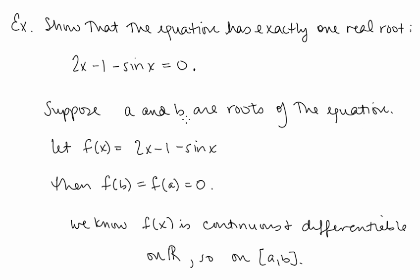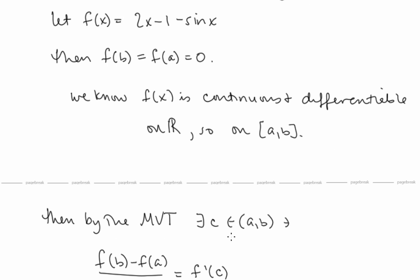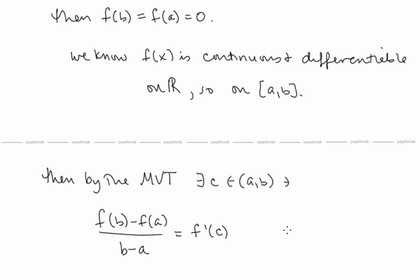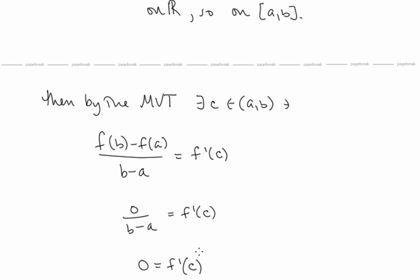Suppose a and b are roots of the equation, and let f(x) = 2x − 1 − sin(x). Then f(b) = f(a) = 0. We can see an f(b) and an f(a), so let's see how to use the Mean Value Theorem. We know f(x) is continuous and differentiable on the entire real line, so certainly on [a, b]. By the Mean Value Theorem, there exists a c in (a, b) such that [f(b) − f(a)] / [b − a] = f'(c). Since f(b) = f(a) = 0 and b ≠ a, this quotient equals 0, so there must exist a c where f'(c) = 0.